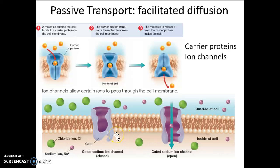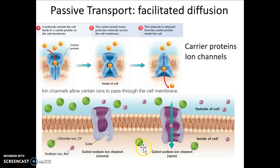A substance can only go through one kind of channel. This is a sodium ion channel — it only lets sodium ions in. This carrier protein lets glucose come in. If you wanted to get chlorine in, you'd need a chlorine ion channel, and if there isn't one, any chlorine inside stays in and any outside stays out. There's a specific protein for every substance transported across the cell membrane, including water — which goes through something called an aquaporin.